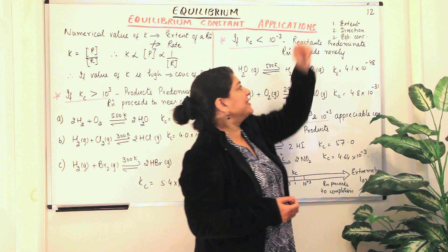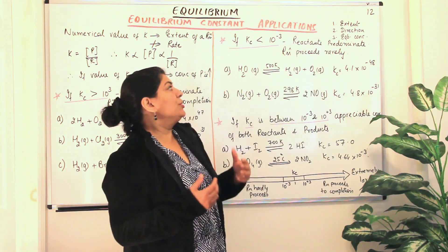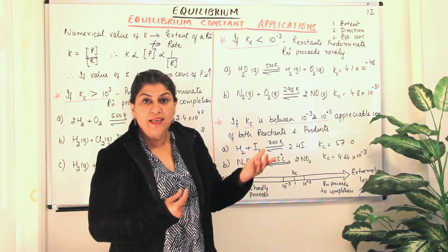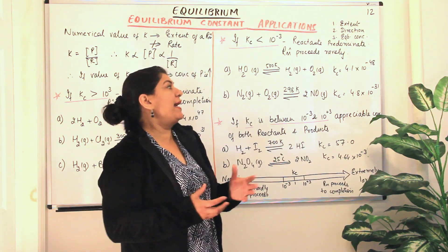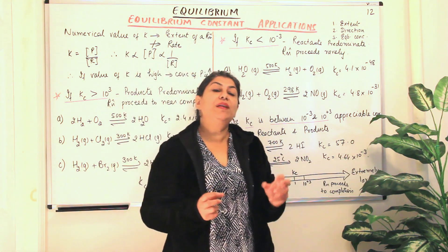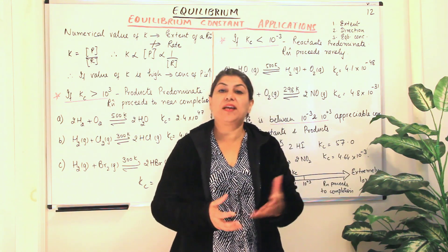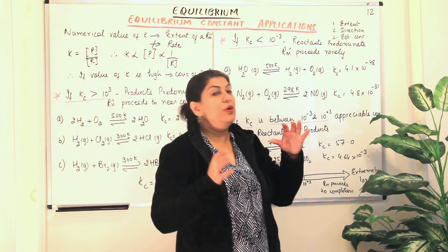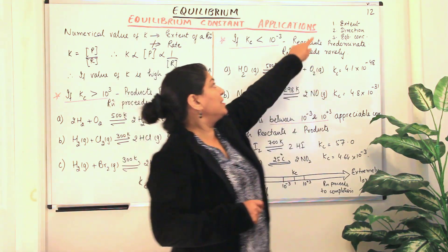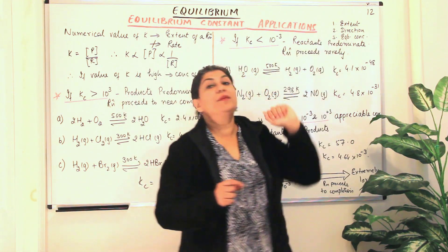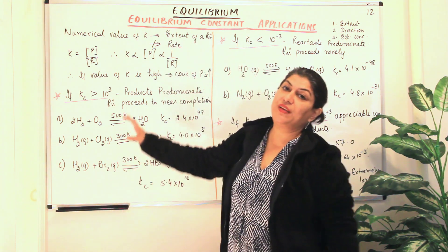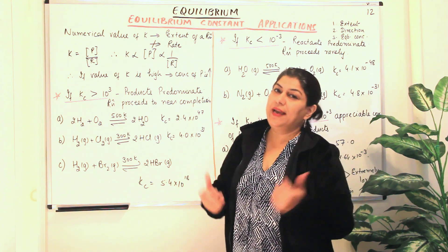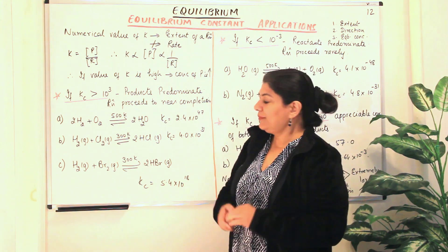The first is to determine the extent of a reaction, to determine the direction in which the reaction is proceeding at that particular moment, and to calculate the equilibrium concentrations of different reactants and products using the equilibrium constant. I will now discuss the first point here: how do we determine the extent of a reaction on the basis of equilibrium constant?